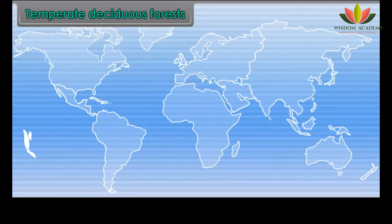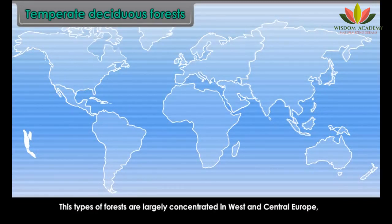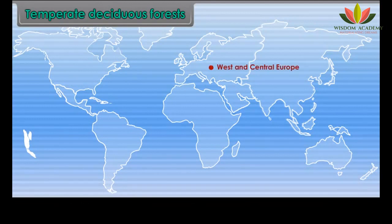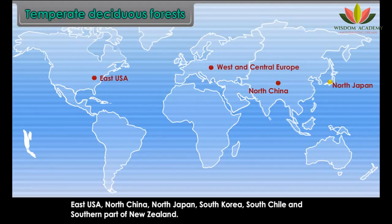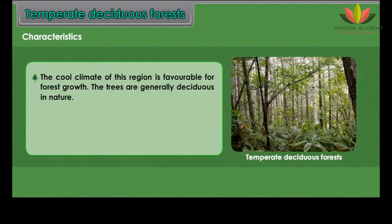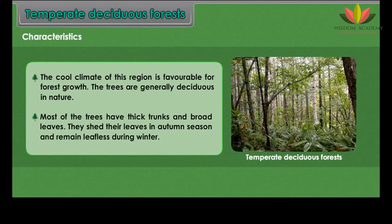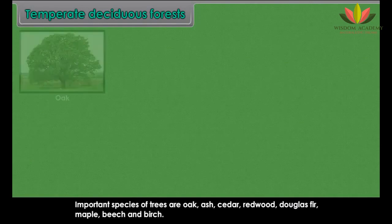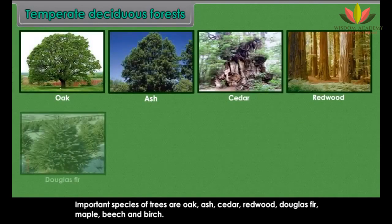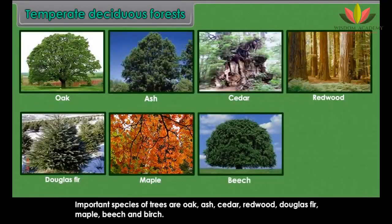Temperate Deciduous Forests are largely concentrated in West and Central Europe, East USA, North China, North Japan, South Korea, South Chile and the southern part of New Zealand. Characteristics: The cool climate is favourable for forest growth. The trees are generally deciduous with thick trunks and broad leaves, shedding their leaves in autumn and remaining leafless during winter. Important species are oak, ash, cedar, redwood, Douglas fir, maple, beech and birch.